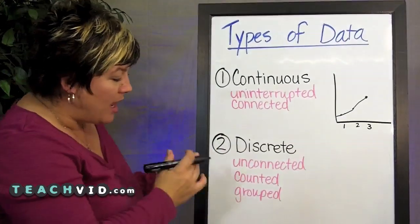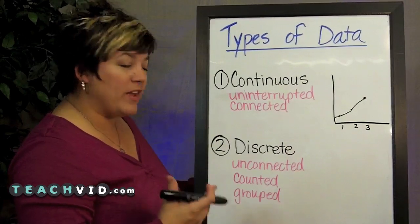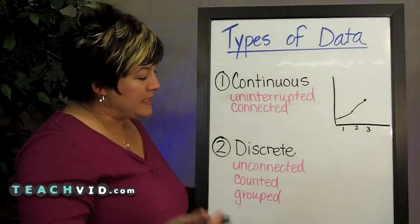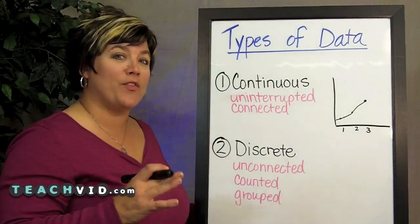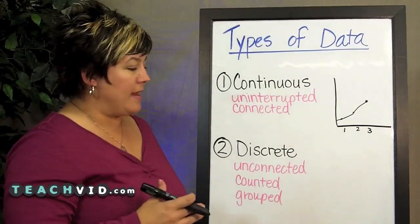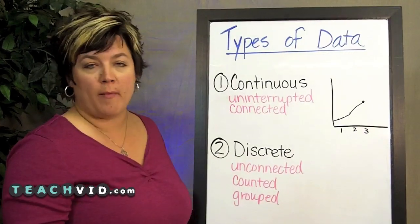Now discrete data is unconnected data. It's counted data or even grouped data. An example of this might be if I took a survey of my class to find out what their favorite type of pizza was. And I'm sure that some of them would say they like cheese and some would like pepperoni and another group might like supreme.